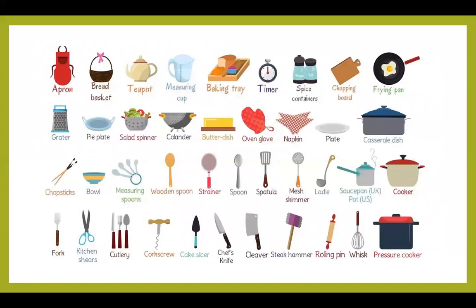Other vocabulary: apron — mandil. Bread basket. Teapot. Measuring cup. Baking tray. Timer. Spice containers. Chopping board. Frying pan. Grater. Pie plate. Salad spinner — que es para secar y drenar específicamente los vegetales. Colander — que es como un colador más grande, se puede usar para el espagueti. Butter dish. Oven glove. Napkin. Plate. Casserole dish. Chopsticks — que son los palitos chinos. Bowl. Measuring spoons. Wooden spoon — una cuchara de madera. Strainer — que es el colador más pequeñito.